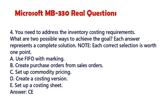Question 4. You need to address the inventory costing requirements. What are two possible ways to achieve the goal? Each answer represents a complete solution. Note: each correct selection is worth one point. A. Use FIFO with marking. B. Create purchase orders from sales orders. C. Set up commodity pricing. D. Create a costing version. E. Set up a costing sheet. Answer: C, E.